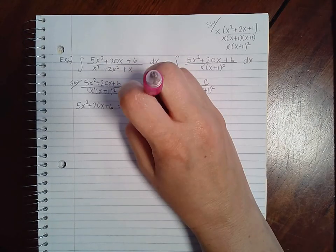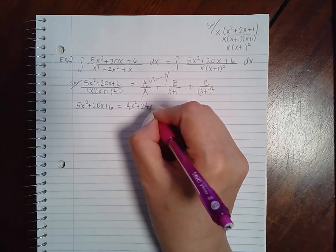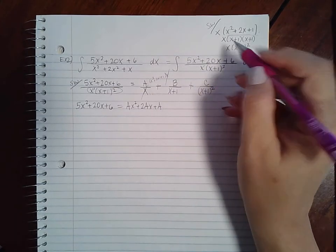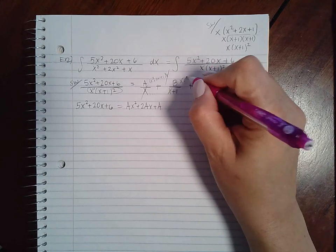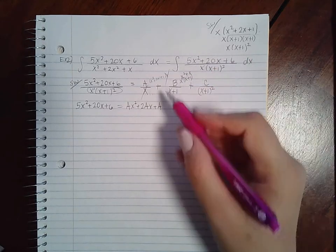So there's nothing the x is going to cancel with this x, so I'm just going to have Ax squared plus 2Ax plus A here. One of them will cancel, but I'll still be left with x and an x plus 1, or x squared plus x.